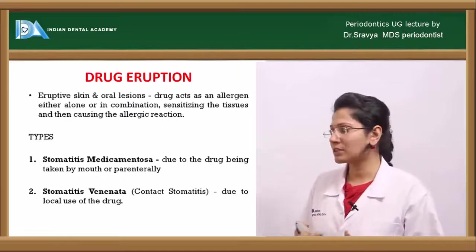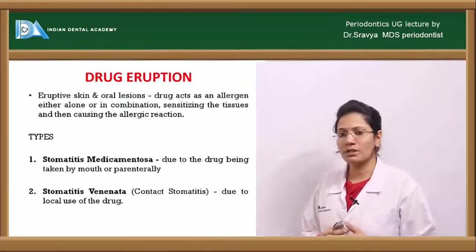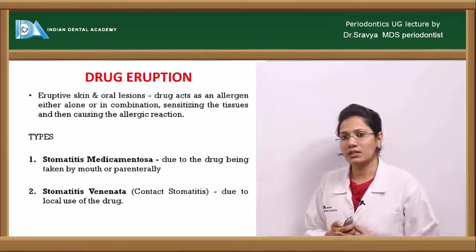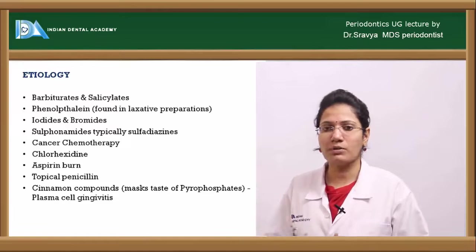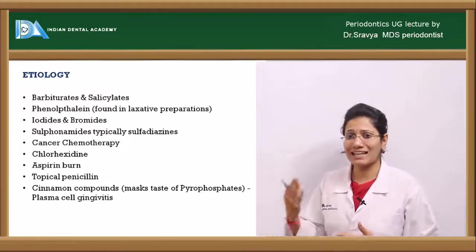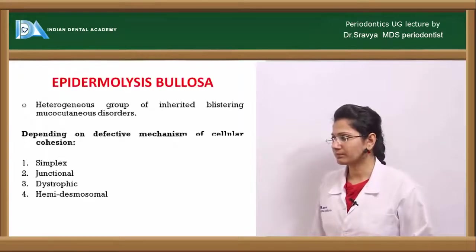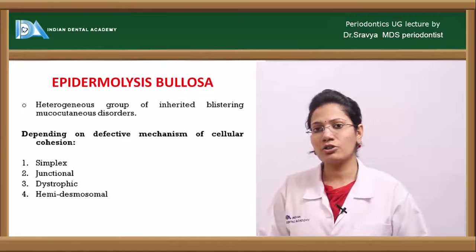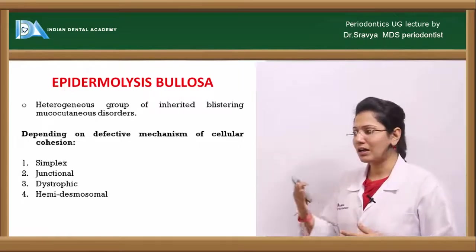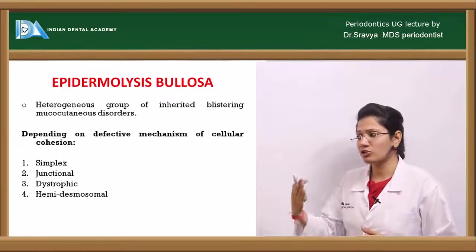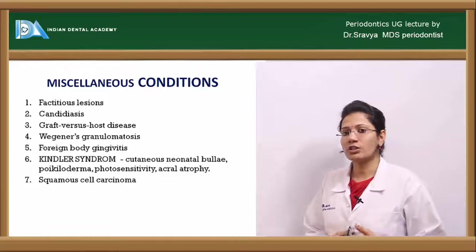Drug eruptions cause eruptive skin and oral lesions where the drug acts as an allergen creating an antibody response. Types include stomatitis medicamentosa and stomatitis venenata — also called contact stomatitis — due to local drug use. Causative drugs include barbiturates, sulfonamides, phenolphthalein, iodides, bromides, aspirin, chlorhexidine, chemotherapy agents, and cinnamon compounds. Epidermolysis bullosa is a heterogeneous group of blistering mucocutaneous disorders based on defective cellular cohesion, with types including simplex, junctional, dystrophic, and hemi-desmosal.